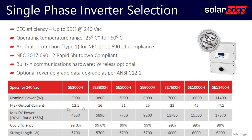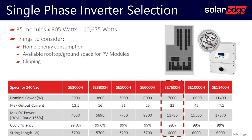SolarEdge single-phase inverters with HD-Wave technology allow a maximum DC to AC ratio of 155%. That means if I have a 10 kilowatt AC inverter, I can put 15.5 kilowatts DC on it. Our system size is 35 modules at 305 watts, yielding 10,675 watts. That means the smallest inverter I can use is a 7.6 kilowatt inverter.